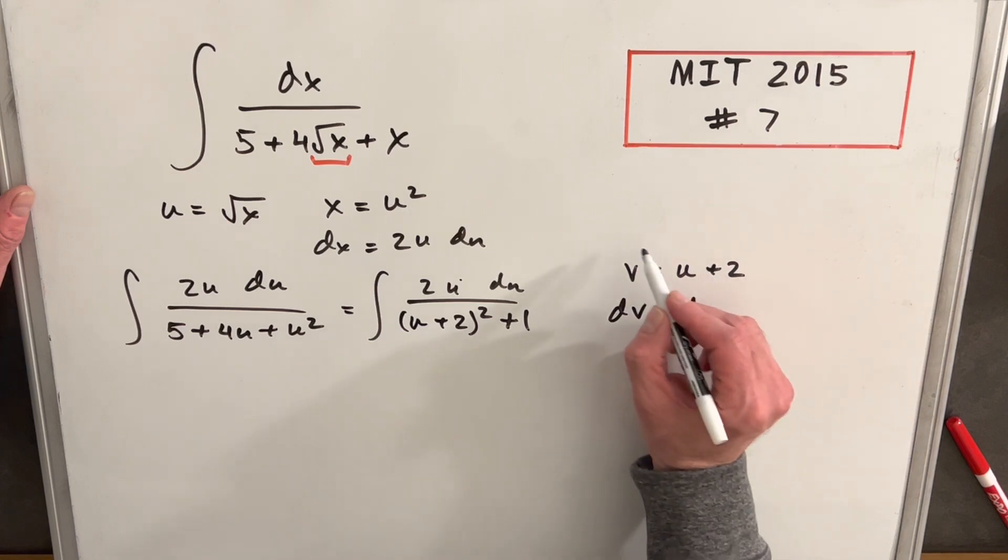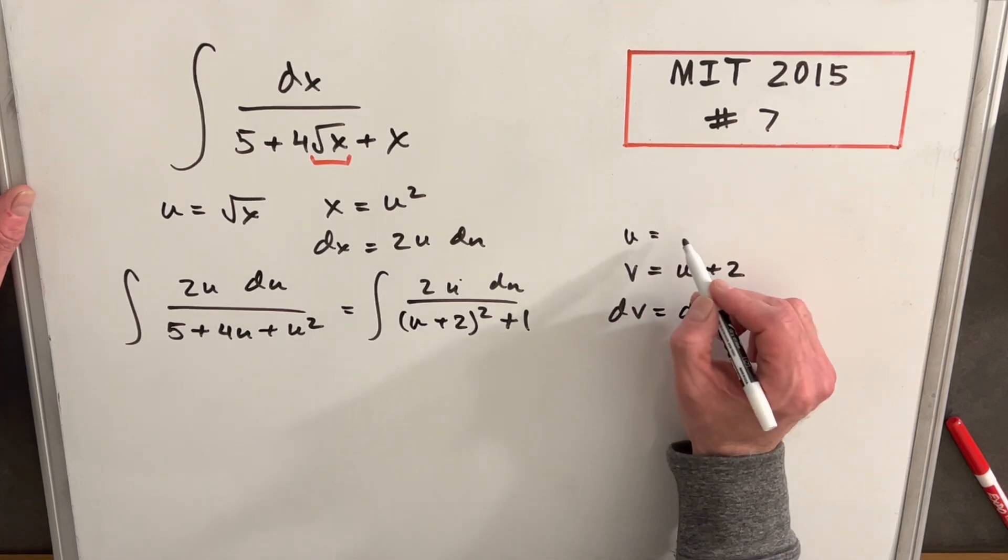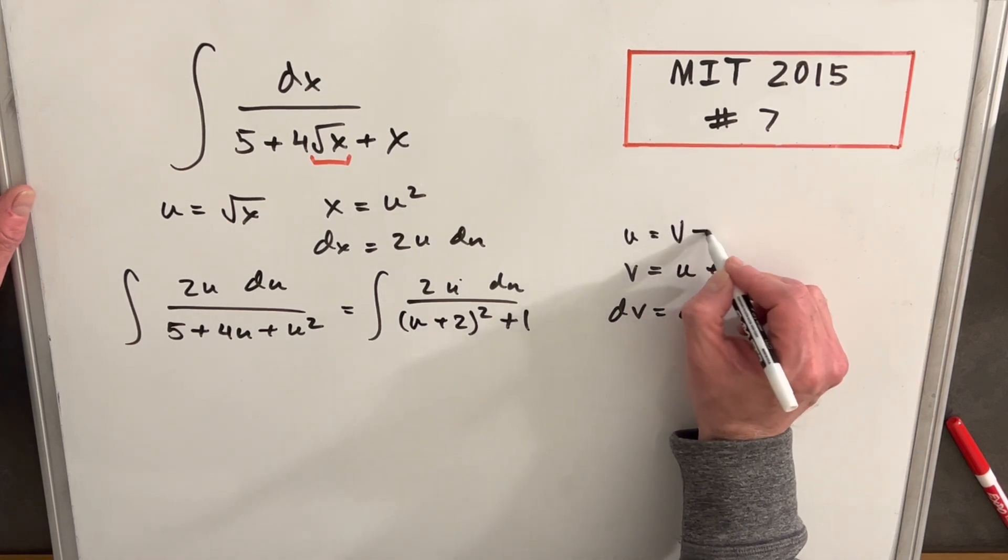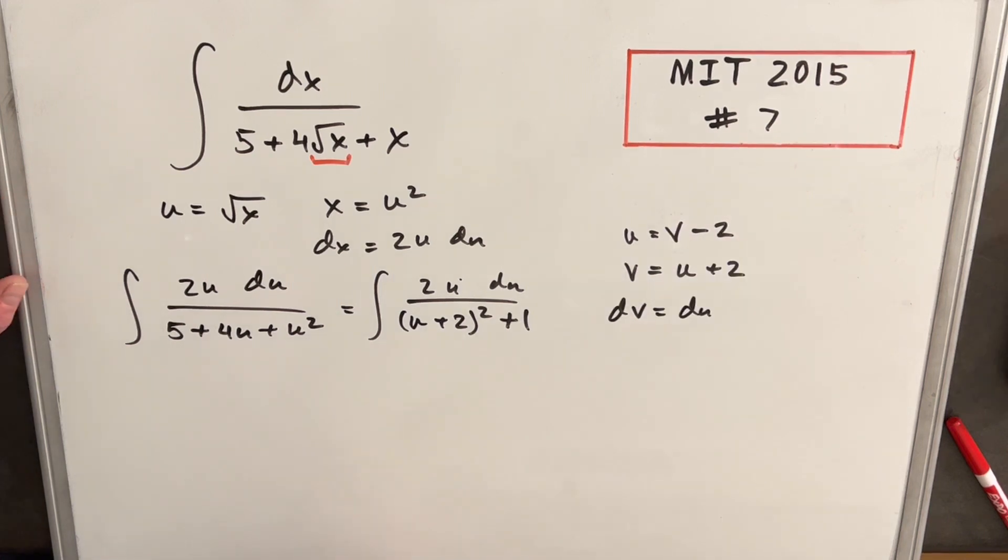But we're going to need a value for u. So let's also write, let's do this up here. We'll say u, just subtract 2 from both sides. u is going to be v minus 2. Now we'll make that second substitution. So 2u is going to be v minus 2 in the denominator. We're just going to have du as dv. And then we're going to have, for u plus 2 is v, so we're going to have v squared plus 1.